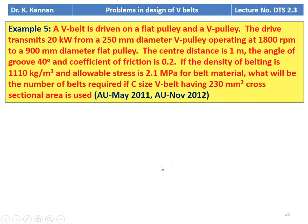Example number 5. A V-belt is driven on a flat pulley and V-pulley. The drive transmits 20 kW from a 250 mm diameter V-pulley operating at 1800 RPM to a 900 mm diameter flat pulley. The center distance is 1 meter, groove angle is 40°, coefficient of friction is 0.2. Density of belting is 1100 kg/m³, allowable stress is 2.1 MPa. Determine the number of belts required if a C-size B-belt with 230 mm² cross-sectional area is used. This question appeared in May 2011 and November 2012.